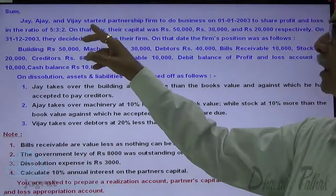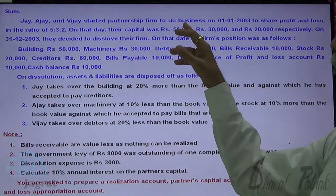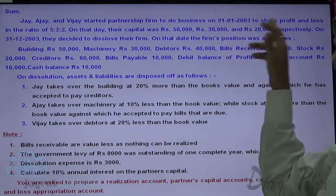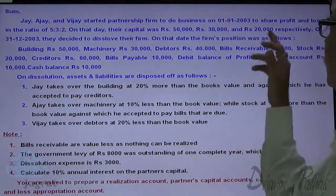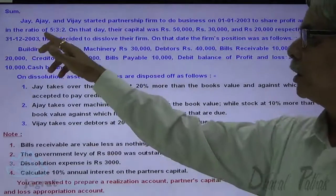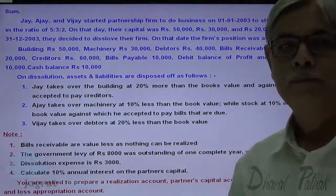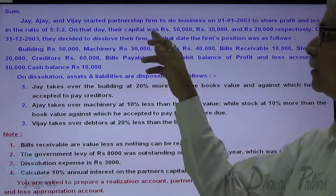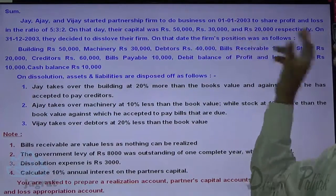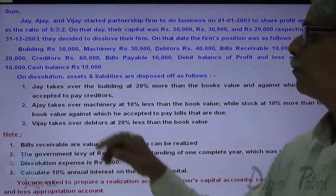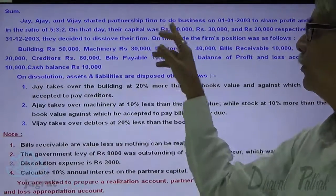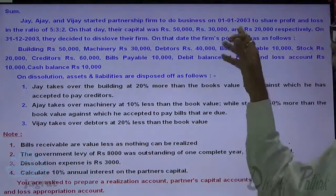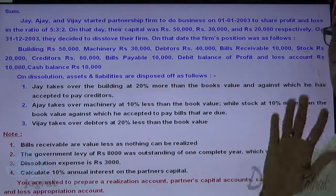Jay and Vijay started a partnership firm to do business on 1st of January 2003, to share profits and losses in the ratio of 5:3:2. On that day, the capital was 50,000, 30,000, and 20,000 respectively — capital of Jay: 50,000, capital of Ajay: 30,000, capital of Vijay: 20,000. This is the capital as on 1st of January 2003.